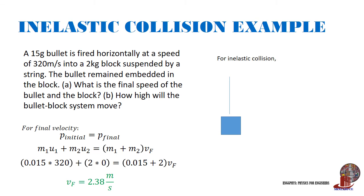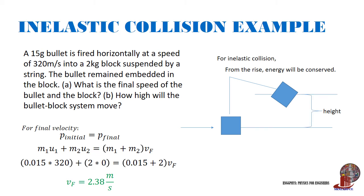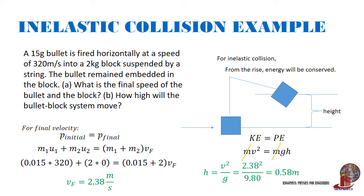For Part B, how high will the bullet-block system move? The inelastic collision gives the block-bullet system an initial kinetic energy, and as it swings up, conservation of energy applies. Expanding: one-half mv squared equals mgh, where m cancels, leaving h equals v squared over g. Computing: 2.38 squared over 9.8 equals 0.58 meters.